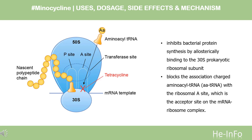Tetracyclines enter bacterial cells through OMPF and OMPC porins by coordinating with cations like magnesium. This allows tetracyclines into the periplasm where they dissociate, allowing the lipophilic tetracycline to diffuse into the bacterial cytoplasm. Tetracyclines prevent aminoacyl-tRNA from binding to the 30S ribosome, inhibiting protein synthesis.